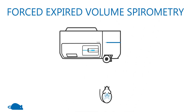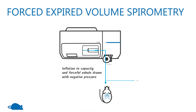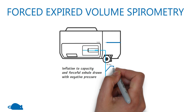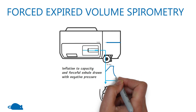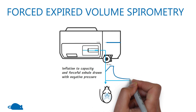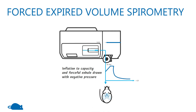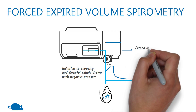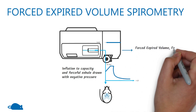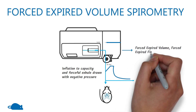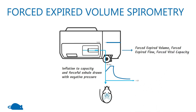In the forced-expired volume measurement, the lungs are recruited to total lung capacity and then a forced expiration is elicited with exposure to a negative pressure. This allows the flexi-vent to calculate spirometry-like measures such as forced-expired volume, forced-expired flow, and forced vital capacity.